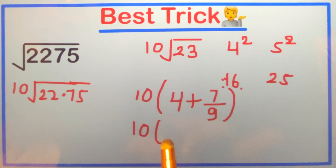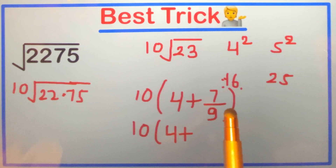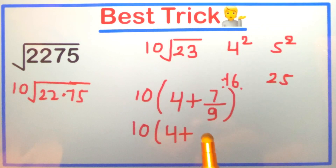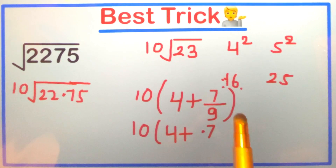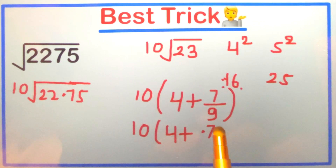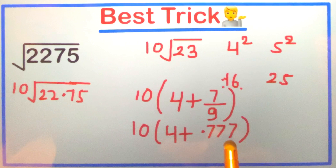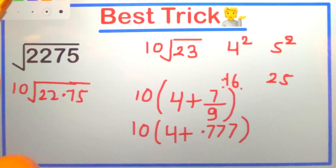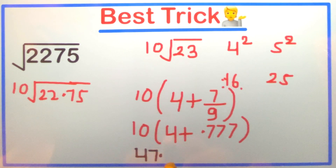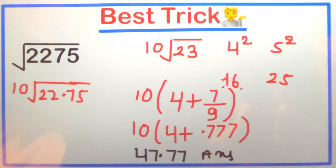So the answer is 10 × (4 + 7/9). Now 7 divided by 9 gives 0.777 repeating, so it becomes 4.777. Multiplying by 10, our final answer is 47.777. That is your answer — it was so easy by applying this trick! Let's do one or two more questions.